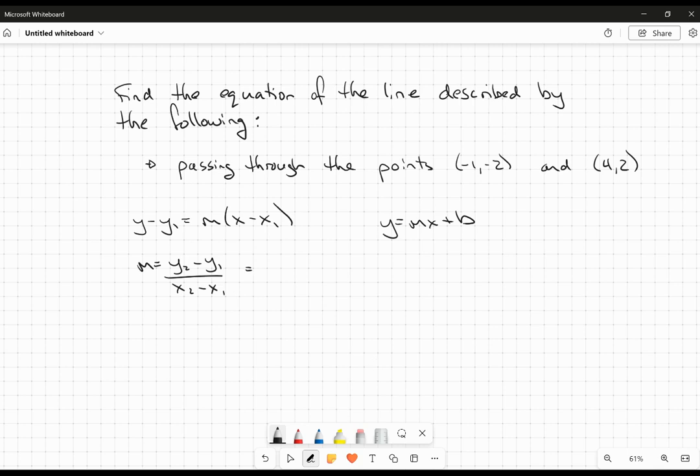And so that is going to be 2 minus negative 2 over 4 minus negative 1. And you've got to be careful about that. The most common mistake that I see students make here, and it's not because they don't know what the formula is, because they're just not thinking in that moment. They're not being careful. They'll do y minus x over y minus x. And that's not how slope works here.